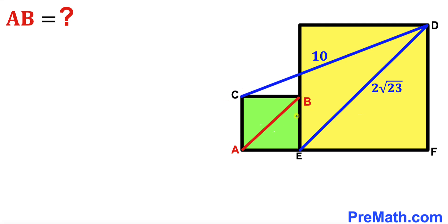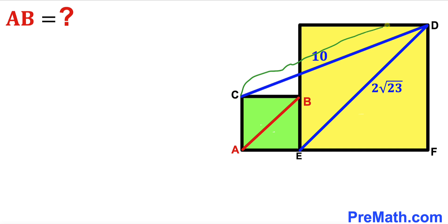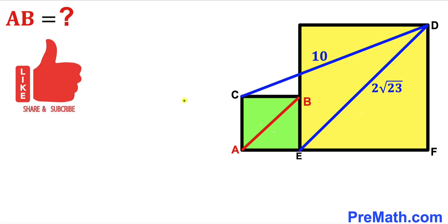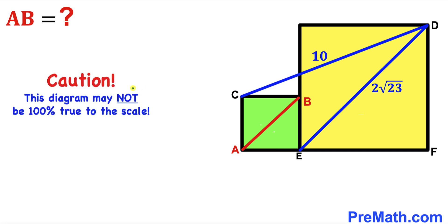Welcome to Premath. In this video we have these two squares — a green square and a yellow square — put together as shown in the diagram, such that the diagonal of the yellow square is 2 times square root of 23 units, and segment CD is 10 units. Our task is to find the diagonal length AB. Please don't forget to give a thumbs up and subscribe, and keep in mind that this figure may not be 100% true to scale.